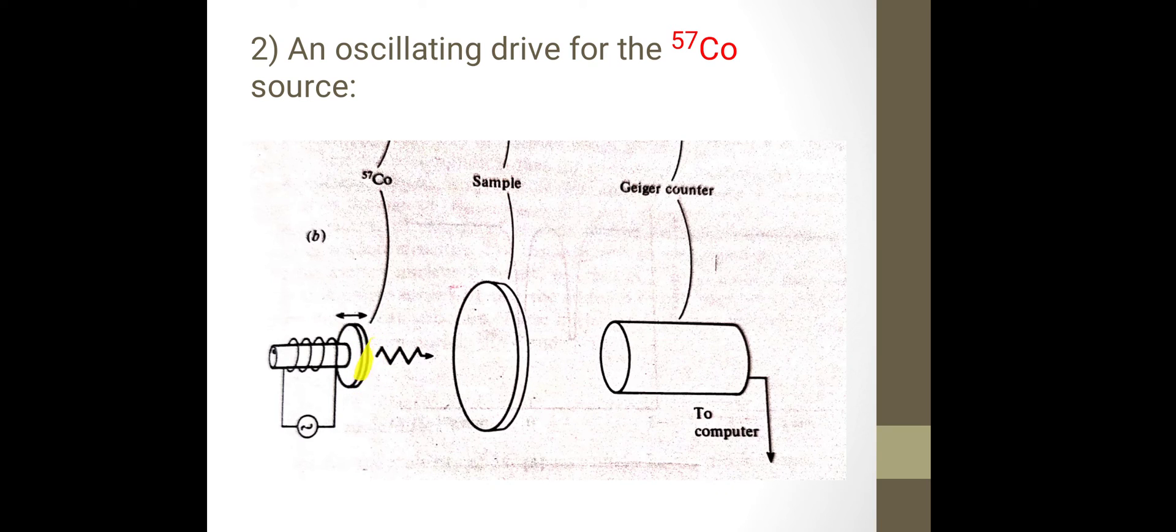The source metal is mounted on a loudspeaker coil. An alternating current of a few cycles per second is applied to the coil. Due to this, the source oscillates back and forth.